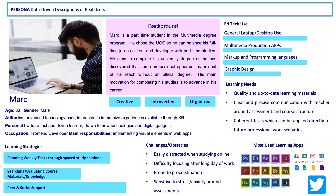The first output has been the development of a persona, which is an archetype of a group of users with similar behaviors, needs, goals, skills, and attitudes. The development of the persona has been data-driven, using data-driven descriptions of real users, and will help guide design decisions by understanding certain characteristics of a typical, archetypal user.